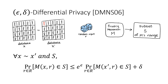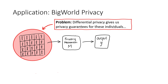Now that we've had an intro to differential privacy, we're going to consider two applications where differential privacy doesn't quite give us what we want or a satisfying answer. The first application we're going to look at is something we're terming big world privacy. The main idea here is that differential privacy gives us privacy guarantees about the individuals contained in the database that we run this privacy mechanism on.